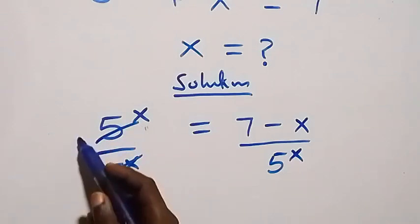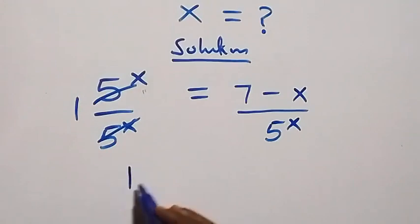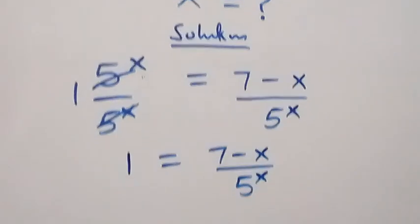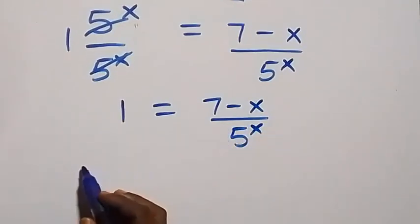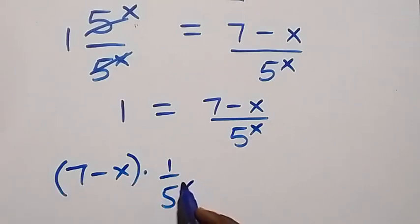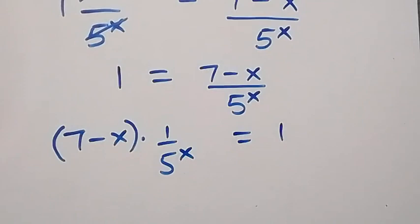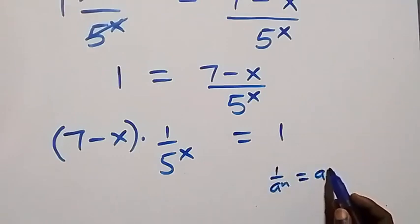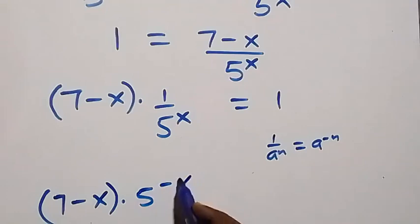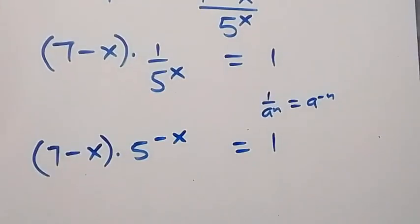Here this cancels to each other and we have 1, which implies 1 equals to (7 minus X) over 5 raised to power X. We can write this as (7 minus X) multiplied by 1 over 5 raised to power X, equals to 1. Using the identity 1 over a^n = a^(-n), we can write (7 minus X) times 5 raised to power minus X, equals to 1.